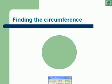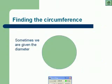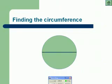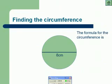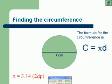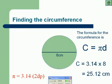So we're being asked to find the circumference. Sometimes we are given the diameter, which is 8 centimetres in this case, and we know that the formula for the circumference is pi times diameter. So if we know that pi is roughly 3.14 to 2 decimal places, we can use our formula to multiply it by 8, which is the diameter, and we get 25.12 centimetres.